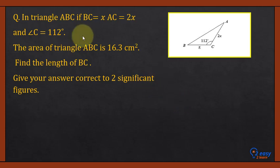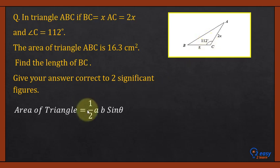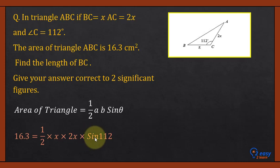Let's solve an exam question. In triangle ABC, BC = X, AC = 2X, and angle C = 112°. The area of triangle ABC is 16.3 cm². Find the length BC — that is, find X — correct to two significant figures. Since an angle is involved, we use: Area = 1/2 × A × B × sine θ. Substituting: 16.3 = 1/2 × X × 2X × sine 112°. The 2s cancel, giving: 16.3 = X² × sine 112°.